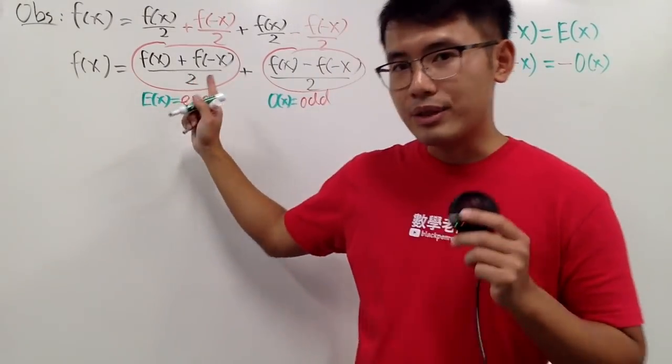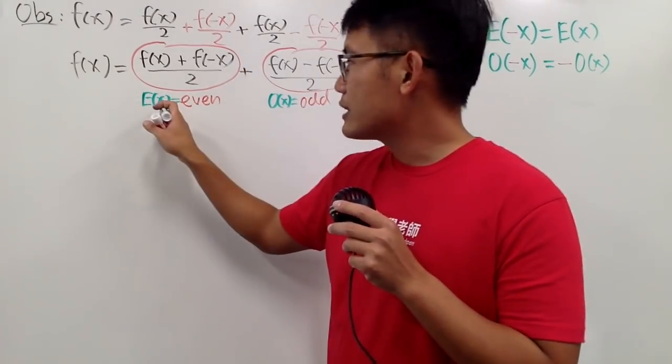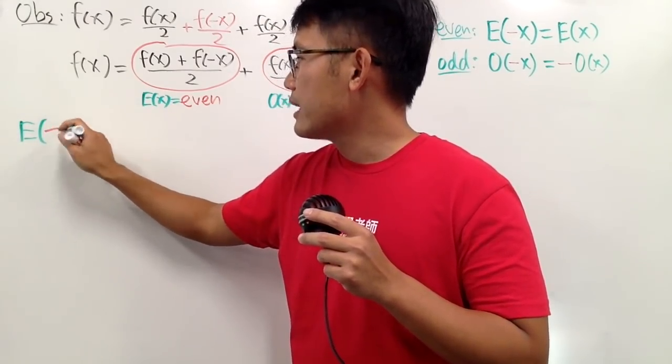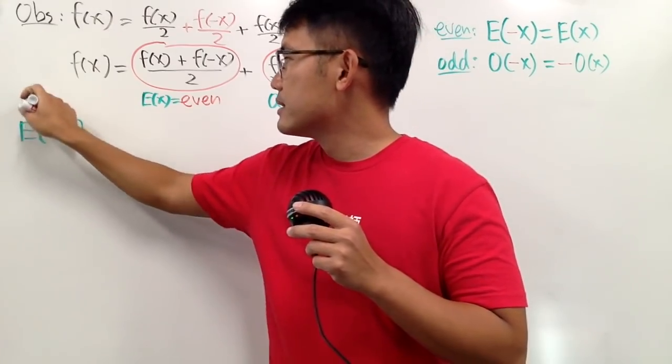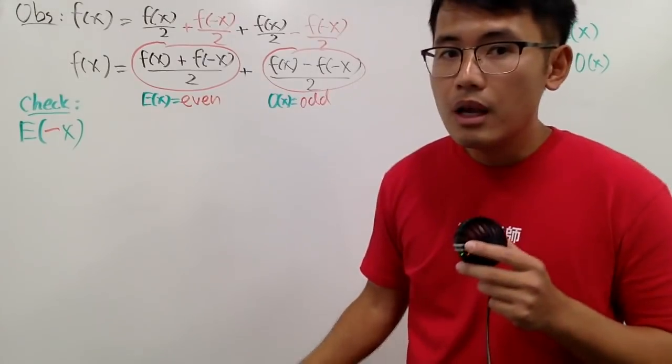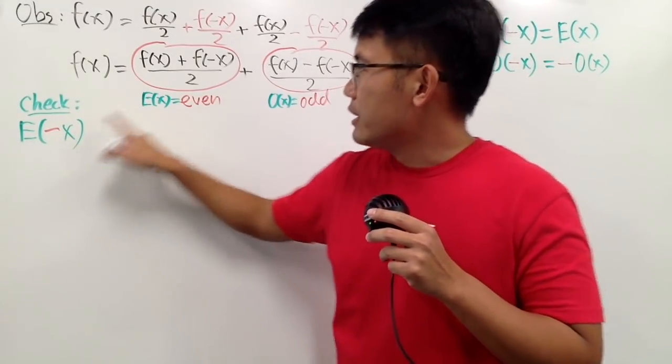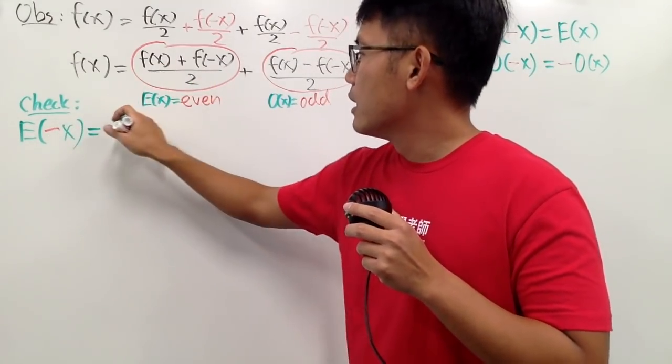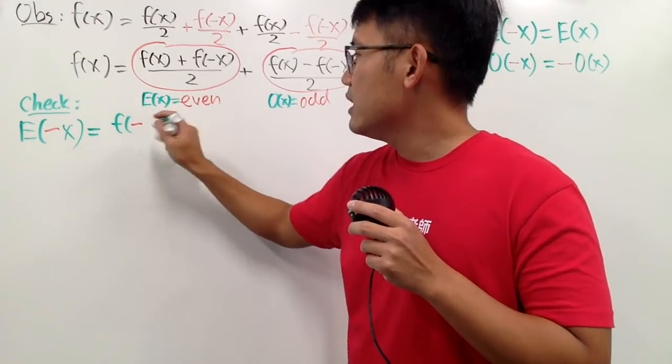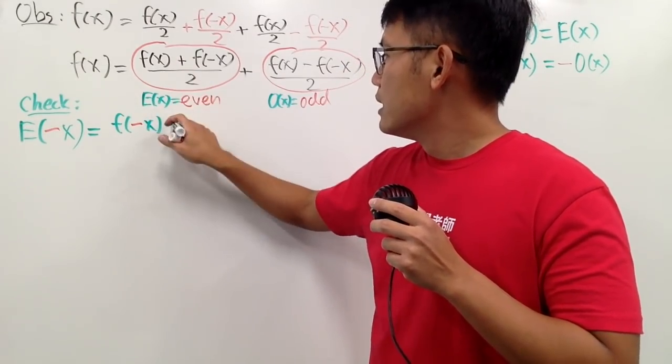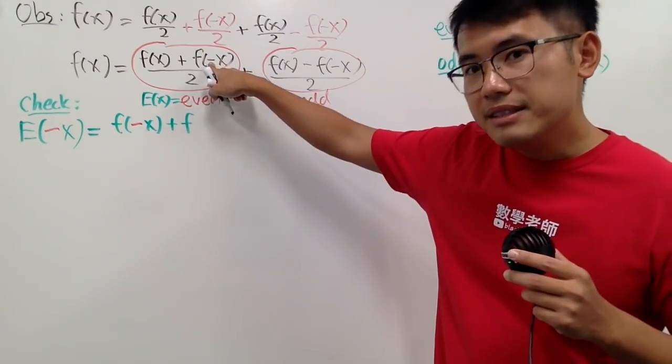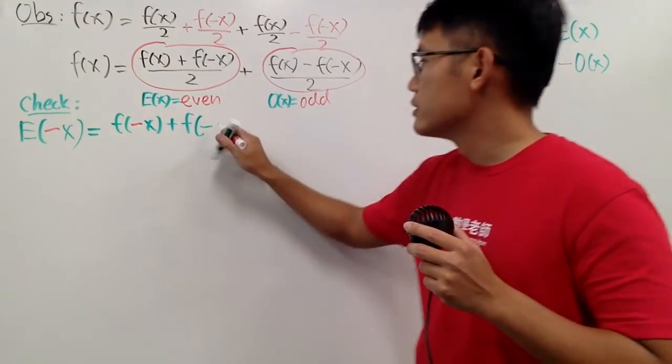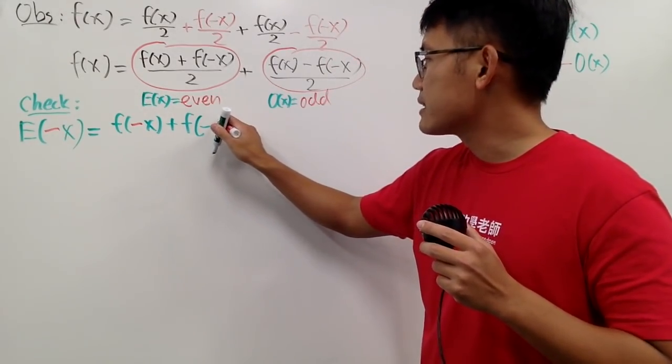So to check, to convince you that this is indeed even, I just have to plug in negative x. We are looking for E of negative x. This is the check. And negative x for E, that just has to be negative x here and here. So E of negative x is the same as f of negative x plus f of, we have this negative originally. Now we have this negative as the input. So we have negative negative x like this.